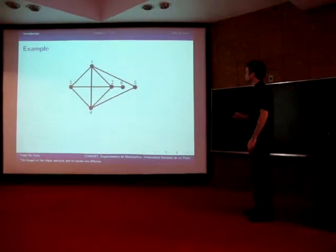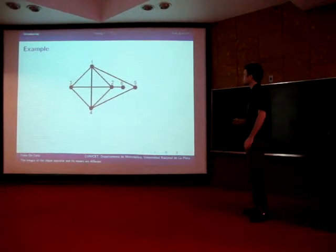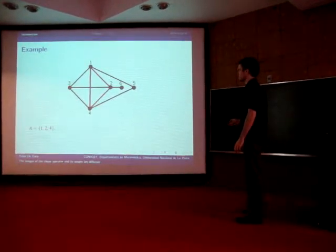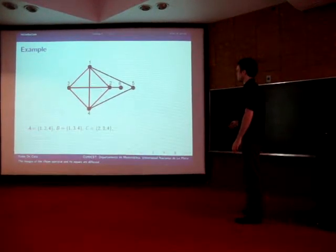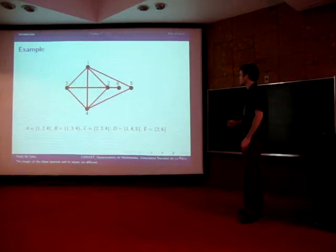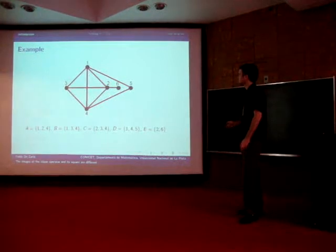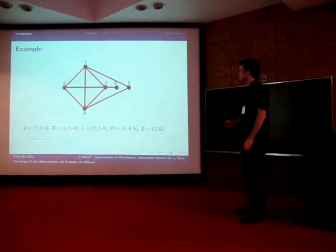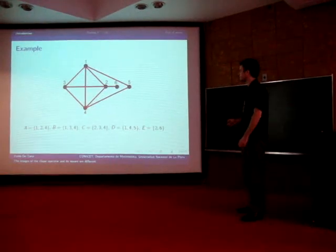For example, let's consider this graph. This graph is a clique graph and we could use these sets 1,2,4; 1,3,4; 2,3,4; 1,4,5 and 6 to cover all the edges of the graph. It is not difficult to see that this is a complete family and that will confirm that the graph is a clique graph.